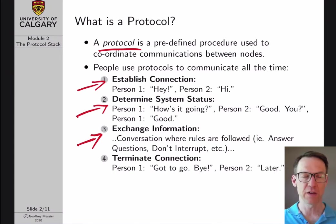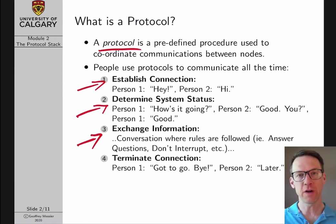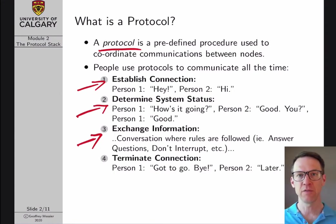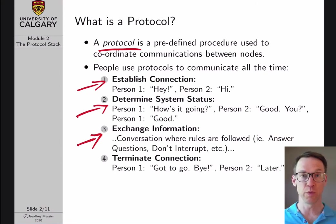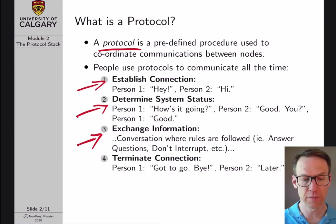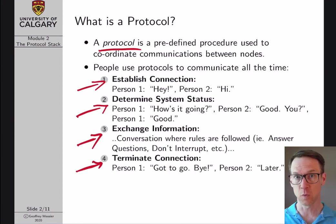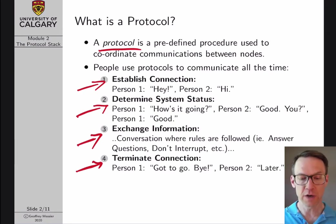Once we've established connection and determined system status, we go on to the third part of our protocol: exchanging information — chatting back and forth. This still follows an unspoken protocol: if I ask a question you give an answer, I don't interrupt mid-sentence. Finally, the last stage is terminating the connection — I say 'gotta go, bye' and you say 'later,' and we go our separate ways.